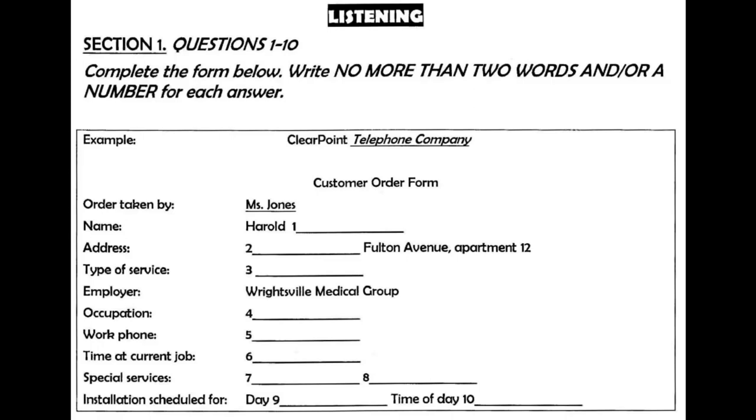You will see that there is an example that has been done for you. On this occasion only, the conversation relating to this will be played first. This is the Clearpoint Telephone Company Customer Service Office. My name is Ms. Jones. How may I help you? Yes, I'm moving and I'd like to arrange to have a phone line installed. The woman answers the phone, 'This is the Clearpoint Telephone Company Customer Service Office,' so the words telephone company have been written at the top of the form.